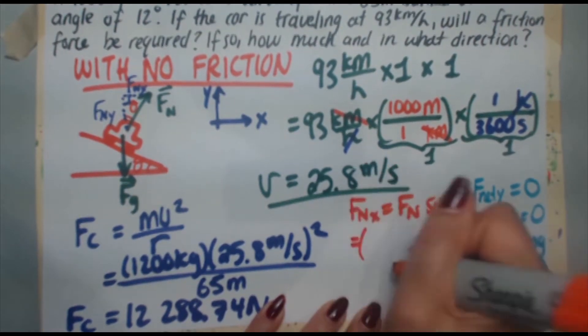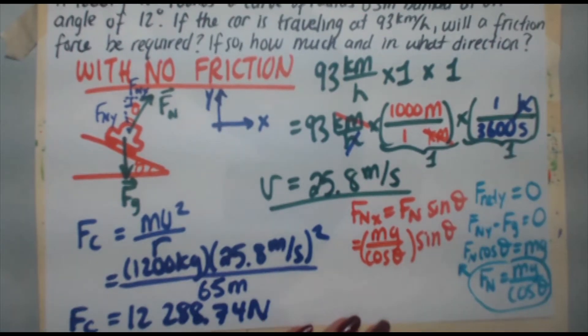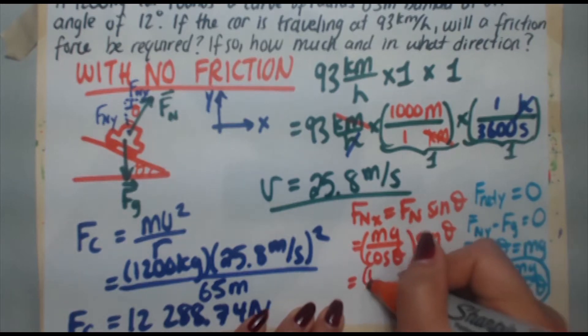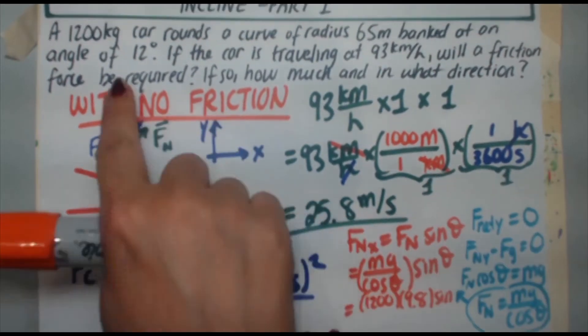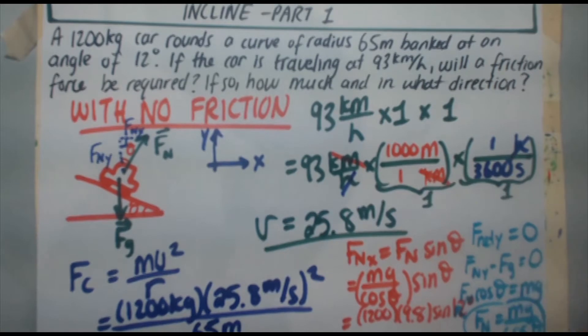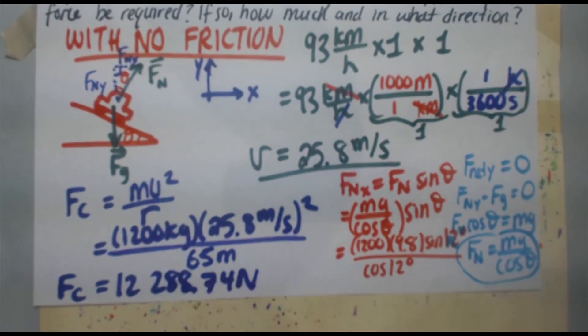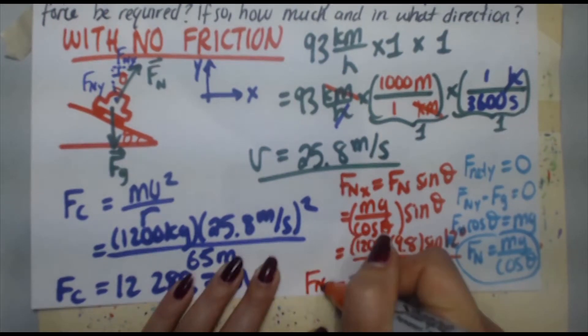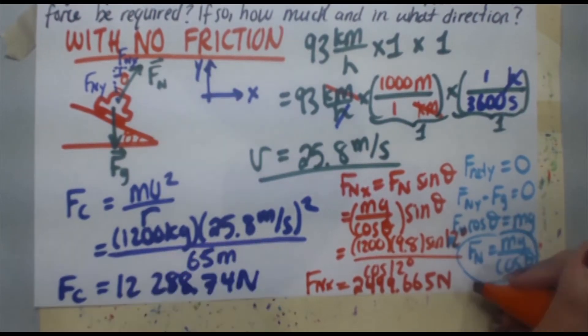So Fn x is equal to bracket mg over cos theta times sin theta. Hopefully you see sin theta over cos theta is tangent. But in the interest of space, I'm just going to plug in the numbers as I have them. So 1200 kilograms times 9.8 meters per second squared times sine of the angle, which is 12 degrees. So sorry, I know it's getting a little bit messy there. Sin of 12 divided by cosine 12 degrees. When you calculate that, we get the normal force in the x direction, and it is going to be equal to 2499.665 newtons. So take a look at that for a sec.